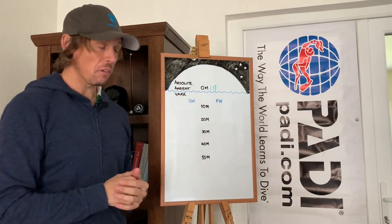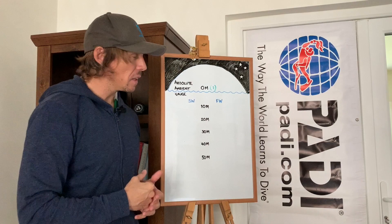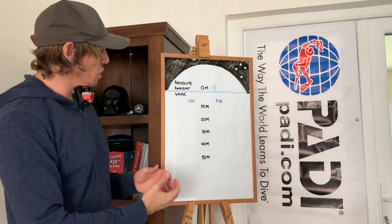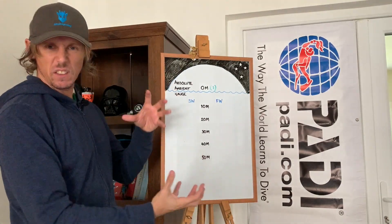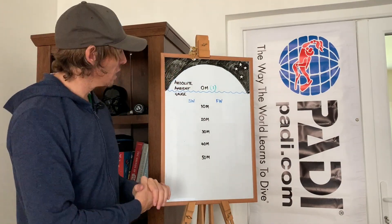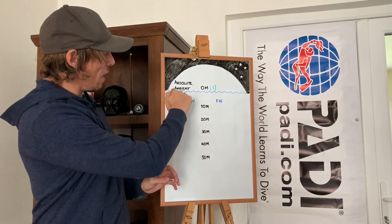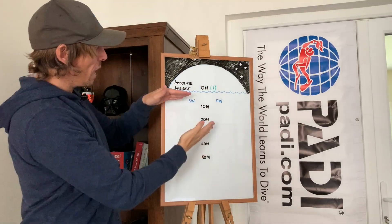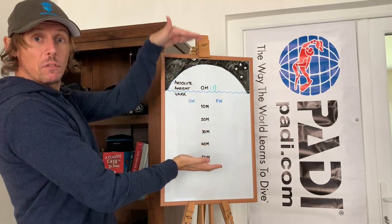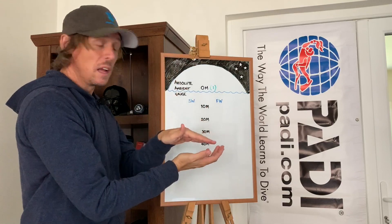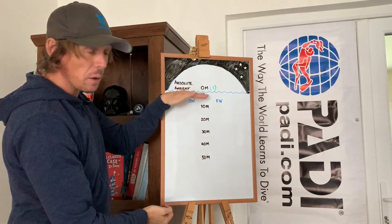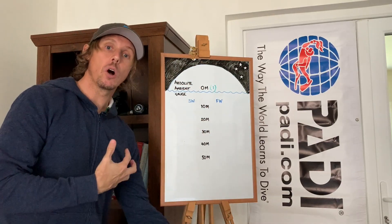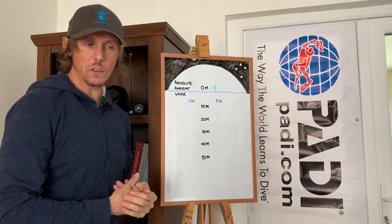Let's kick things off with this diagram. This is a quick visual representation of the Earth in terms of diving pressure. We have sea level, everything above sea level which is the atmosphere, and everything below sea level which is the depths of the ocean.